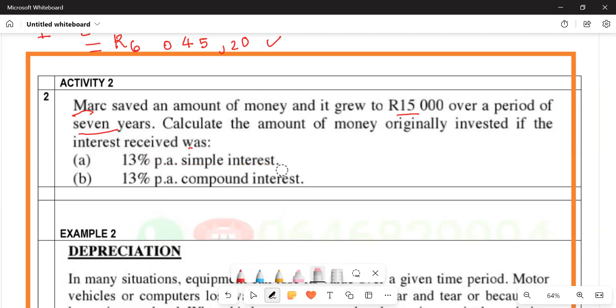Let's start with number 8. The formula is A equals P open bracket one plus i times n. According to this, A is the accumulated amount. We're looking for P.